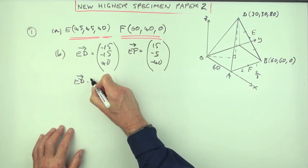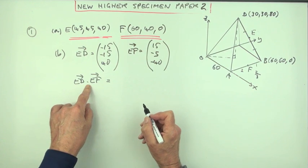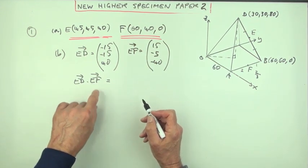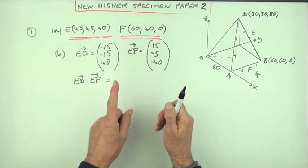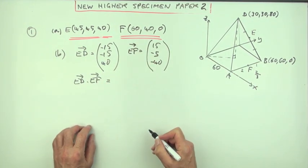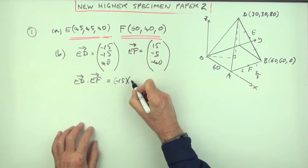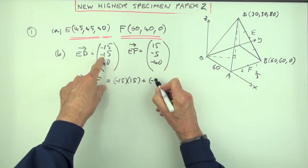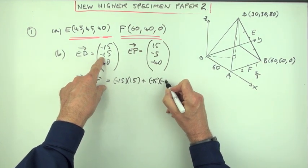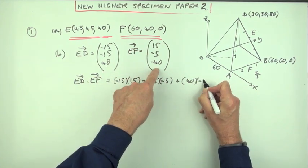Right, so what's the scalar product then? ED times EF. The scalar product. ED dot EF. Multiply the corresponding components and add them to a single number, a scalar. Corresponding components. Negative 15 times 15. Y components. Negative 15 times negative 5. Z components. 40 times negative 40.